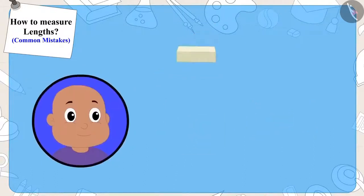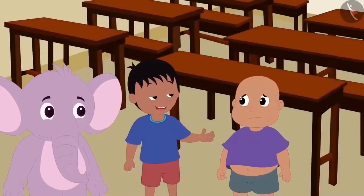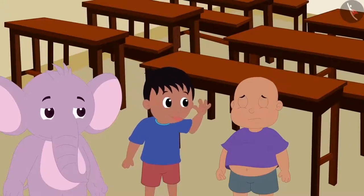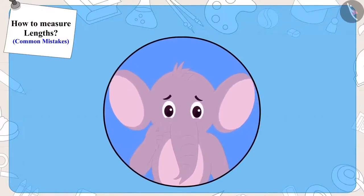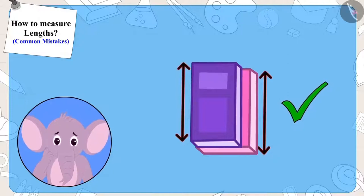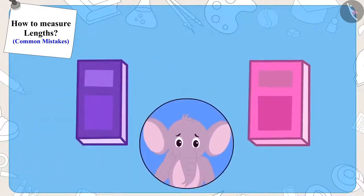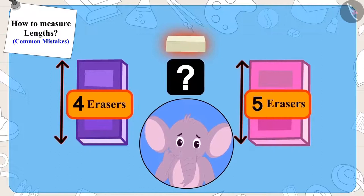Bablu also used the same eraser to measure the length of his notebook, but Bablu's notebook was only four erasers long. Raju started teasing Bablu saying that his notebook was longer. Appu was doubtful. He immediately kept one notebook above the other and found that both notebooks were of the exact same length. Appu was shocked — if they had used the same eraser to measure both notebooks, how had the measurements turned out to be different?